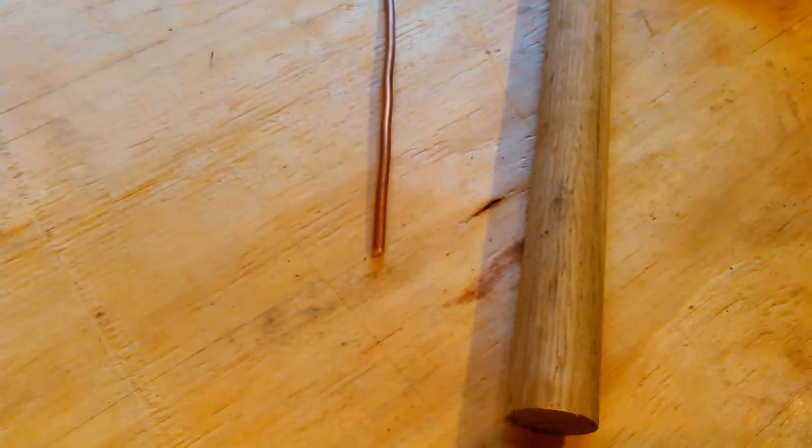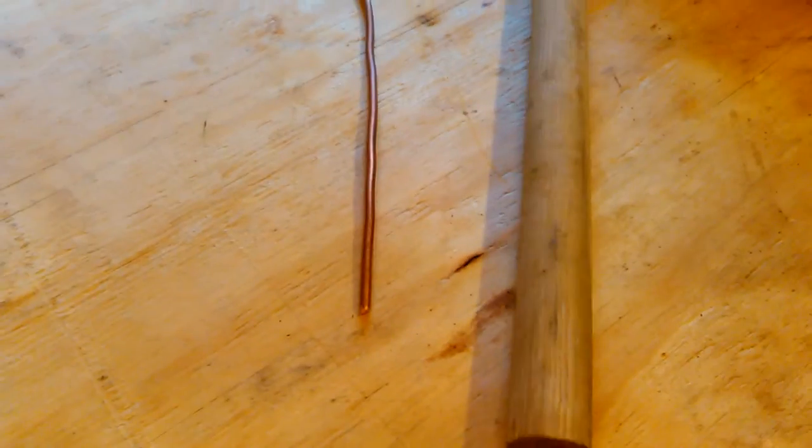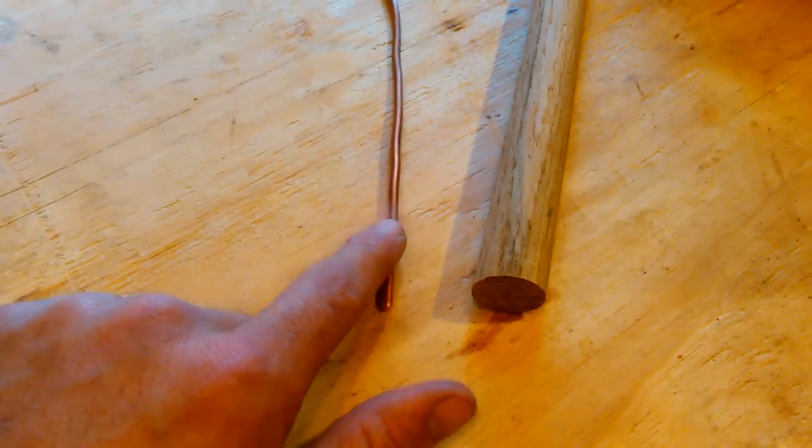You just cut it down to the lengths that you want, then drill into the end of it with the appropriate size bit for the wire that you're using.